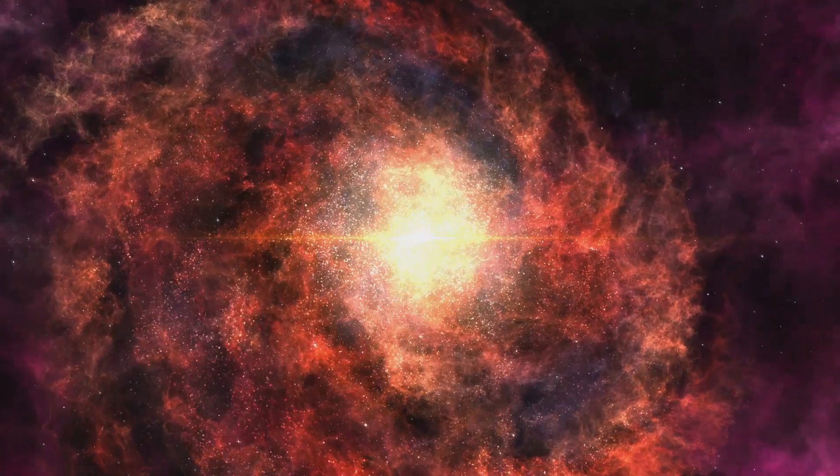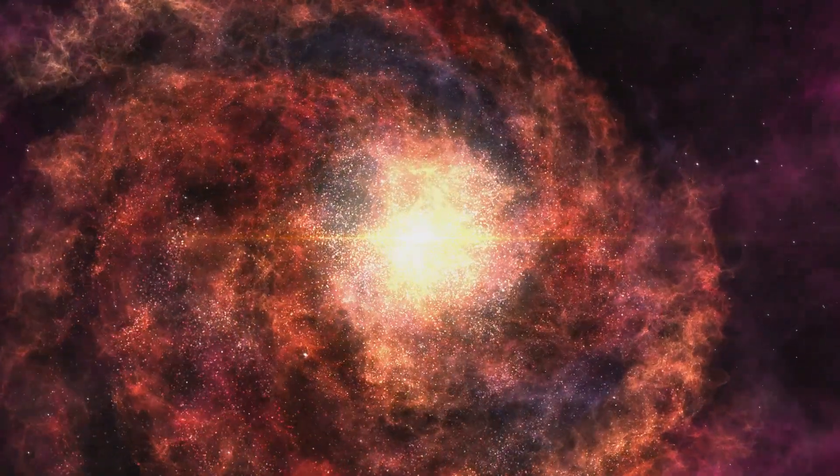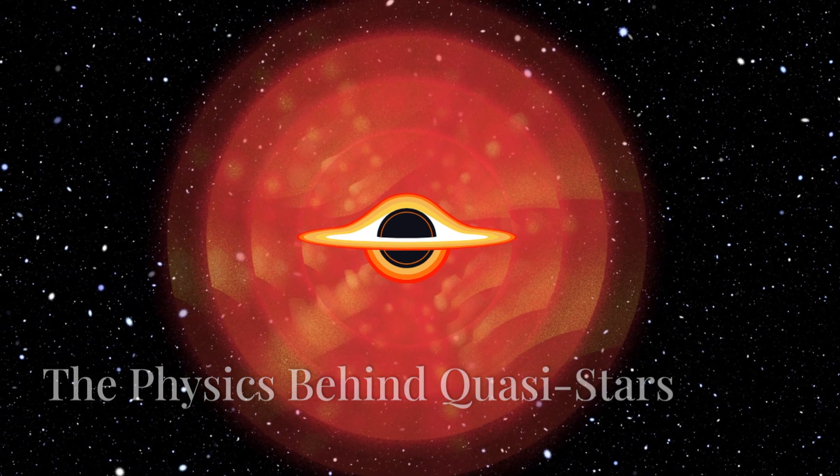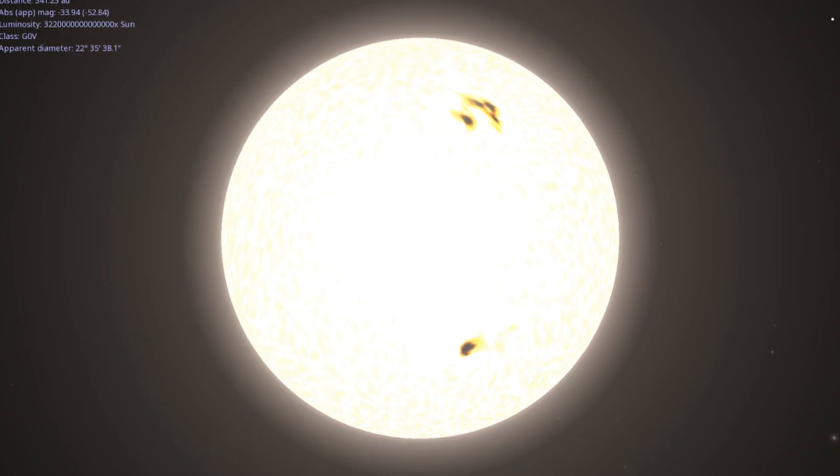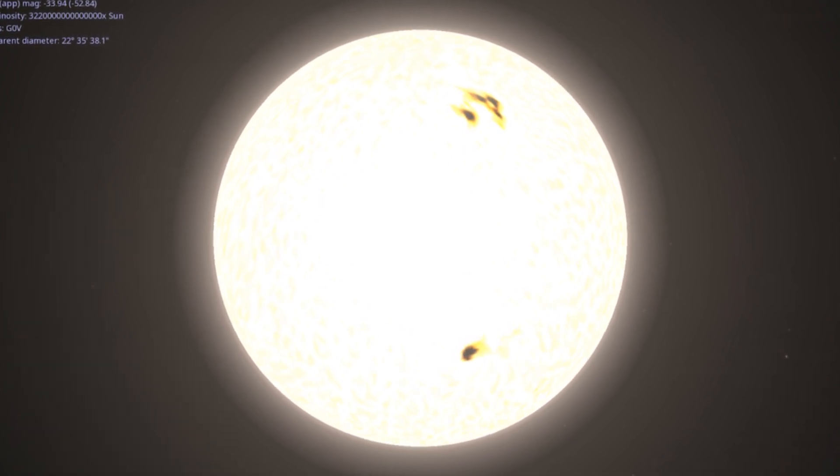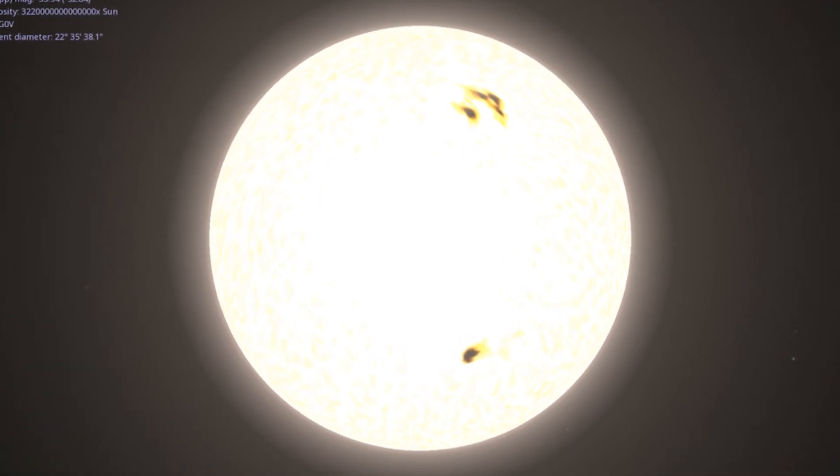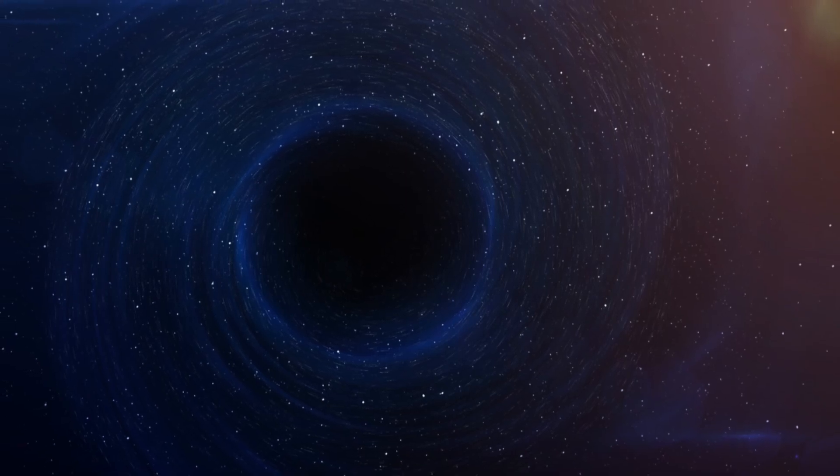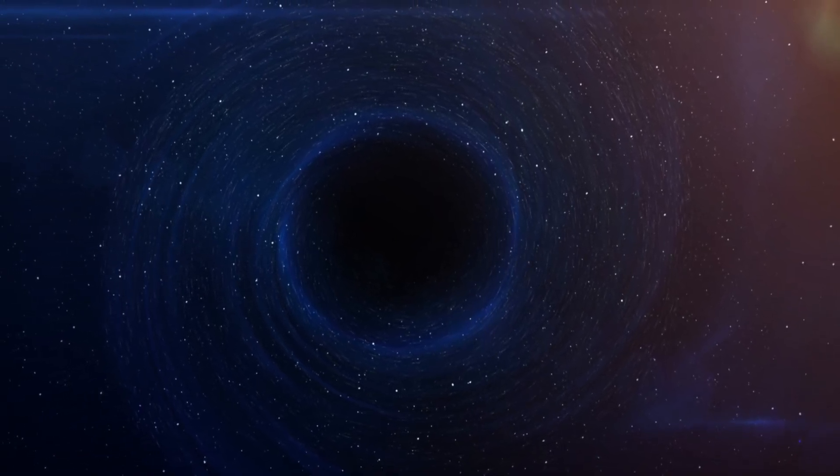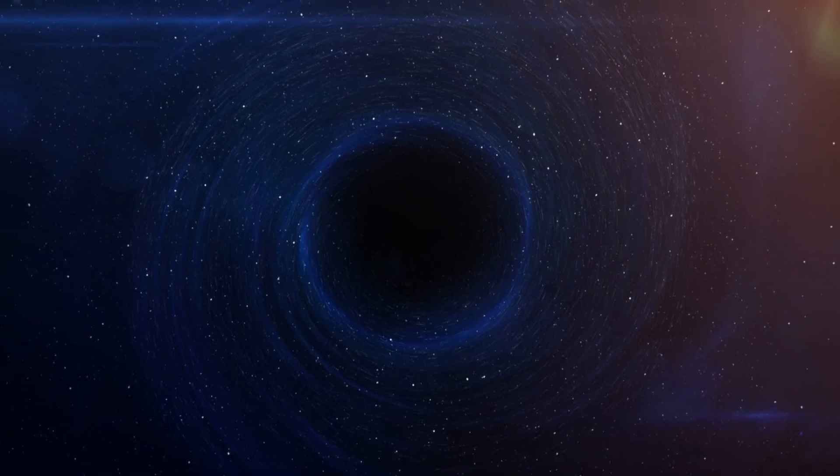Now you'd think the black hole would just devour the surrounding star, right? Well, not right away. Let's dive into the physics that makes them tick. Quasi-stars exist in a delicate balance between two incredibly powerful forces, gravity and radiation. The star's massive size means that gravity is pulling inward with enormous force, trying to collapse everything into the black hole at the core. But there's something fighting back.